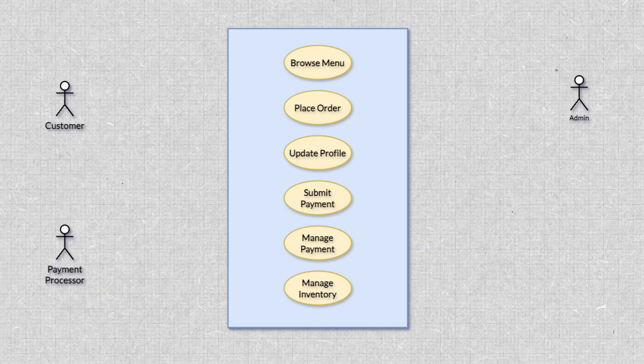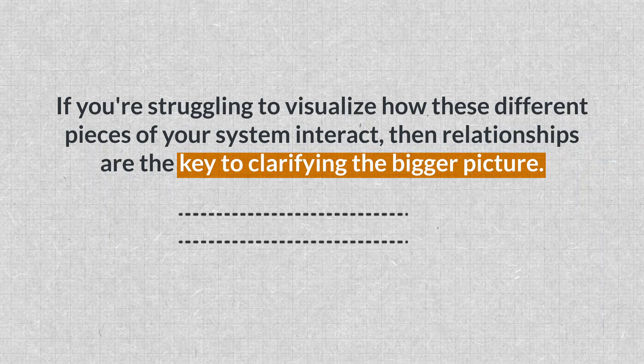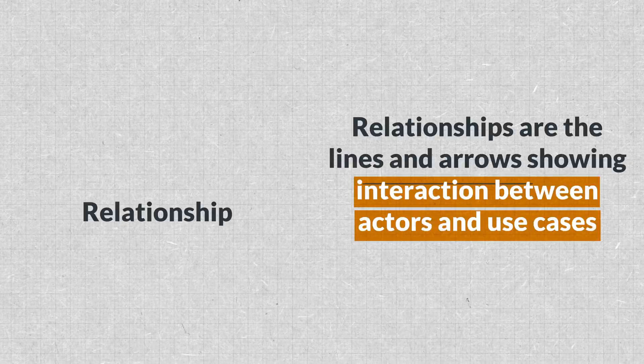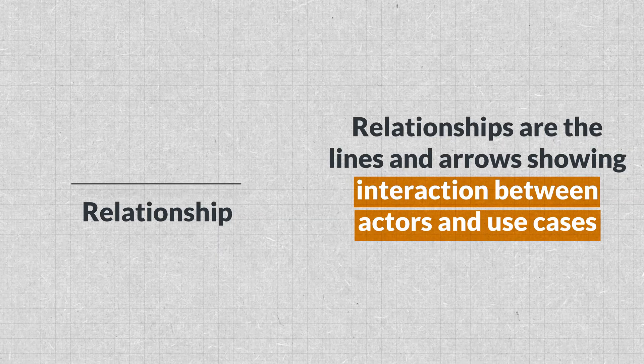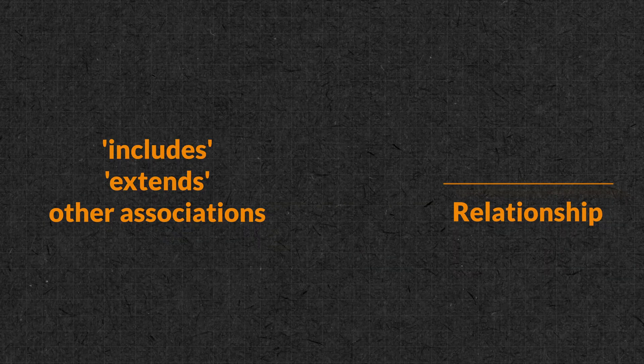We have the key players — the actors — and we have their actions — the use cases. The final piece of the puzzle is understanding how everything connects, and this is where relationships come into play. If you're struggling to visualize how different pieces in your system interact, relationships are going to be key to bringing clarity to the bigger picture. Relationships are the lines and arrows showing the interaction between actors and use cases. They can represent things like includes, extends, and other associations. Think of relationships as the traffic flow of your system, dictating how users navigate and accomplish their goals.